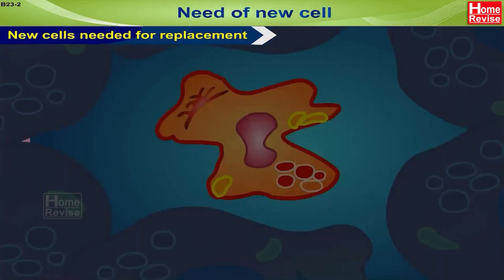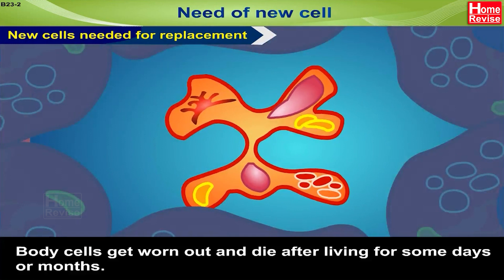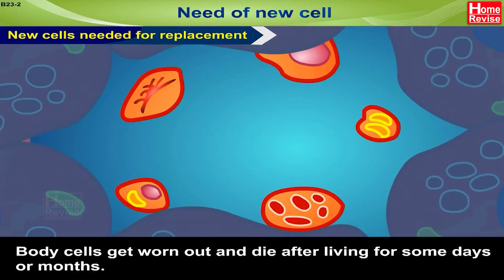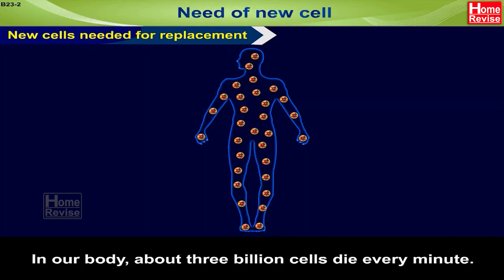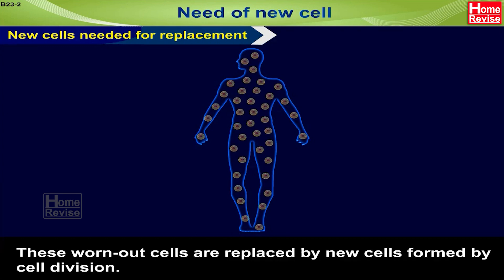Second, new cells are needed for replacement. Body cells get worn out and die after living for some days or months. In our body, about 3 billion cells die every minute. These worn-out cells are replaced by new cells formed by cell division.